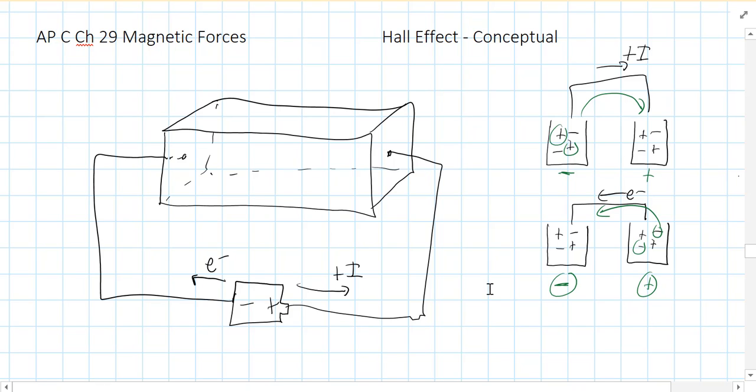it turns out in about 1879, so almost 20 years earlier, Hall, and his full name is Edwin Herbert Hall, was able to determine that it is indeed negative charges moving through your circuit. How did he do it?